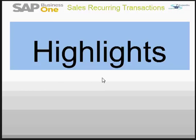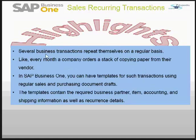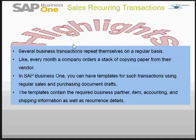Let's see about the highlights of recurring transactions. Certain businesses have transactions that repeat themselves on a regular basis. For example, every month the company may order a stack of printing papers, some stationery items, or refreshment items for the staff. In SAP Business One you can define templates for such recurring transactions using your regular sales and purchasing documents, and they will be in draft mode. Here we will be seeing only the sales transactions.